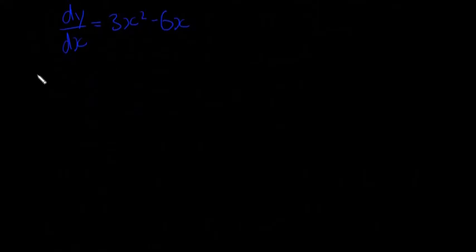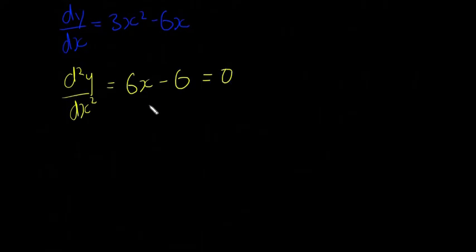And then we're going to find d²y/dx². d²y/dx² is going to be equal to 6x - 6. And like we said, we're going to let that equal to zero to find the point of inflection. So we let this equal to zero. We get 6x - 6 = 0. 6x = 6 and then x = 1.